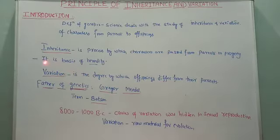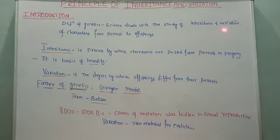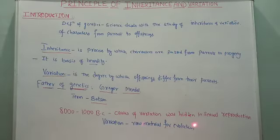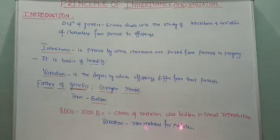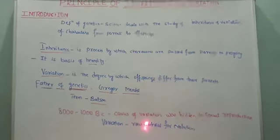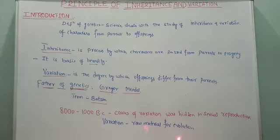Inheritance is the basis of heredity, and variation is significant because it is responsible for evolution — it is the raw material for evolution. We have studied the gradual change in organisms through evolution, and the main raw material for that evolution is variation. So this is all about the definitions of inheritance and variation.